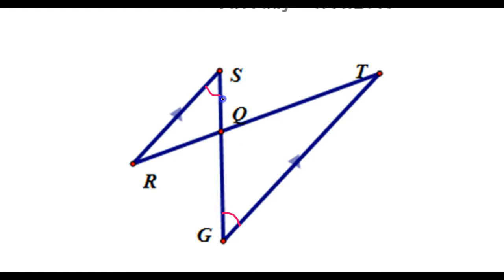So as I'm talking, listen for your statements and reasons. That's going to show up in the proof somewhere. The statement would be angle S is congruent to angle G, and the reason would be: if the lines are parallel, alternate interior angles are congruent.